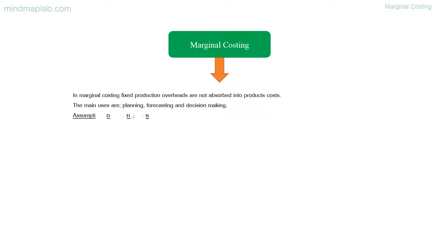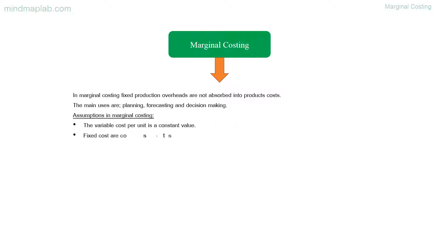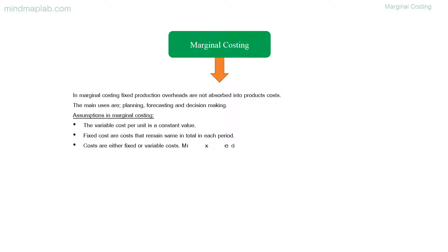Assumptions in marginal costing: The variable cost per unit is a constant value. Fixed costs are costs that remain the same in total in each period. Costs are either fixed or variable costs. Mixed costs can be separated into a variable cost per unit and a fixed cost per period.